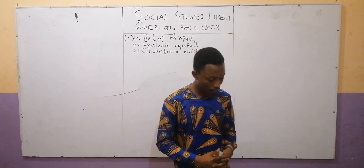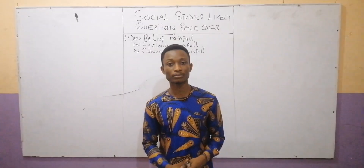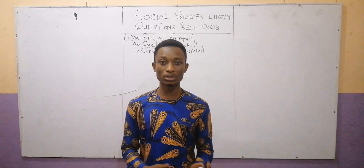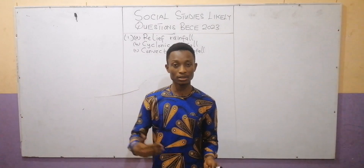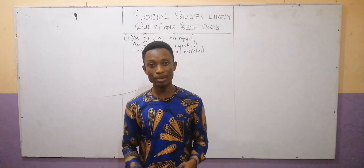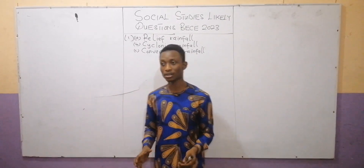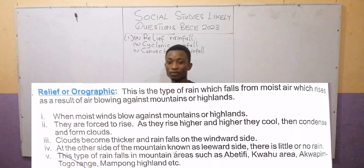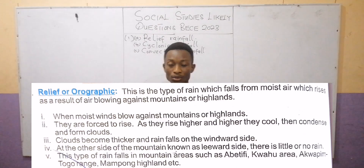The next question says we should explain how any of the three types of rainfall is formed with the aid of a diagram. Questions like this demand a descriptive answer and also a diagram. Don't forget, most of these questions carry lots of marks. The diagram will have marks and the written parts will have their marks too. So let's deal with all parts. Let's take the first one: relief rainfall.